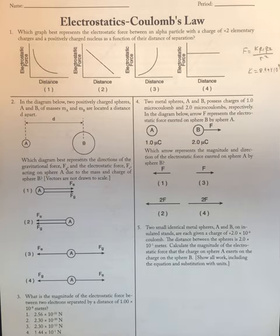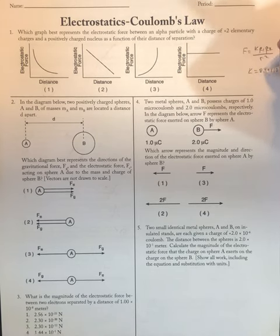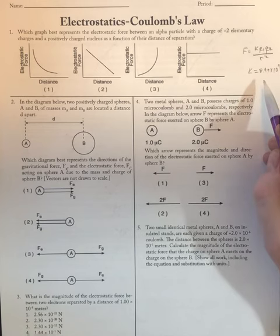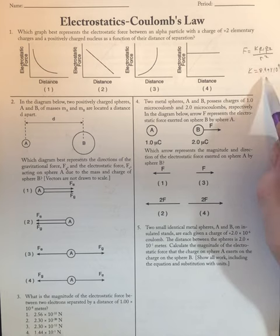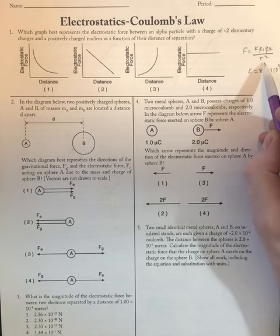Coulomb's Law — we're basically looking at how to manipulate this equation. Force equals K, which is the constant 8.99 times 10 to the 9th. You can use 9 to make it easier, but remember that on short answer questions, put it in as 8.99. Then multiply by the charge of the first particle times the charge of the second particle, divided by the distance between them squared.